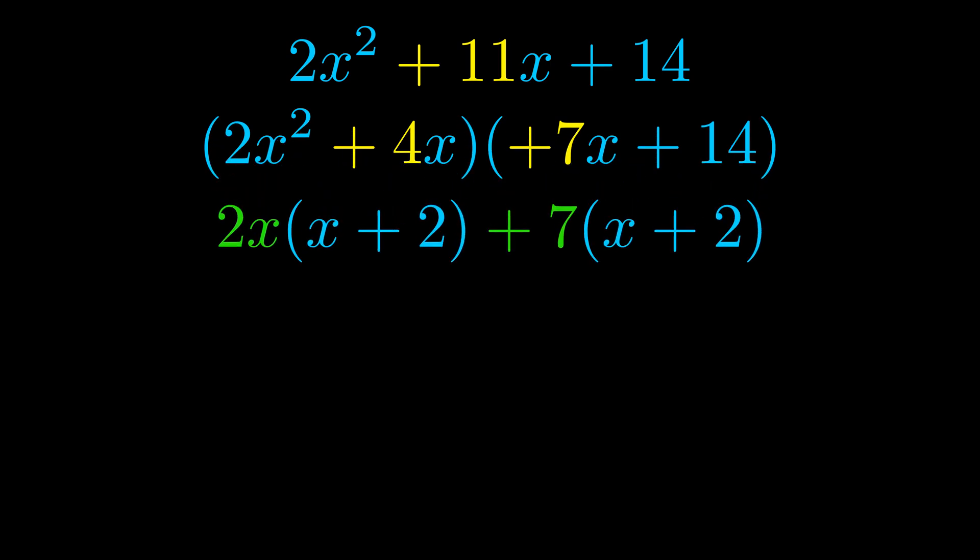We can see the greatest common factor is now outside in green. Notice also how what remains inside of the parentheses is the same in both cases. The blue values are the same. Those blue values will become one of our factors and we will combine the two green values, the GCFs that we pulled out, to get the other one. And that is our fully factored equation.